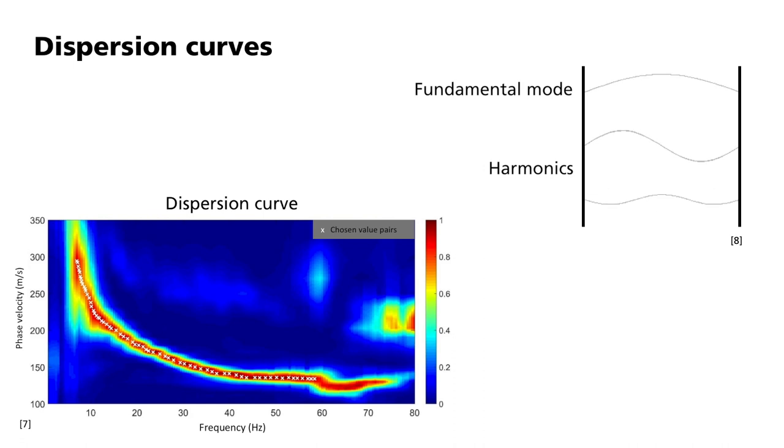In the dispersion curve, the red areas represent high amplitudes, while the blue areas represent low amplitudes. The striking red area corresponds to the fundamental mode, that is, the root in musical terms of the Rayleigh wave. Waves with frequencies of 5 Hz thus show phase velocities of about 300 m per second,